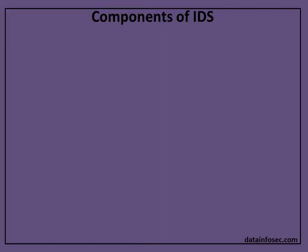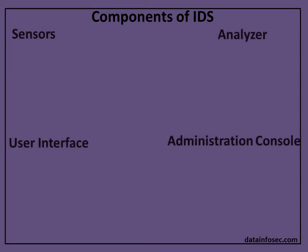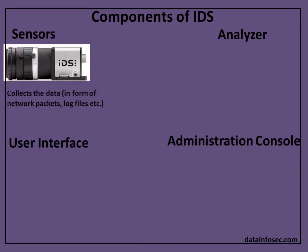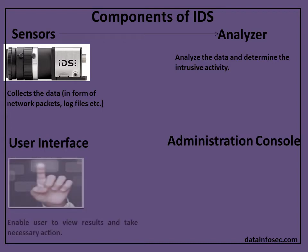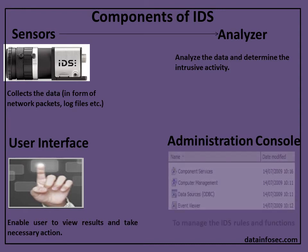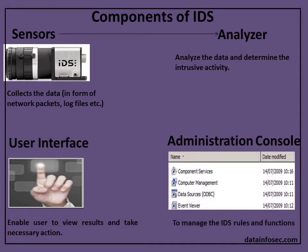The components of IDS are: sensor, analyzer, user interface, and admin console. The sensor collects data, which can be in the form of network packets, log files, and other related items. It transfers all data to the analyzer to further analyze and determine intrusive activity. The user interface enables users to view results and take necessary action, and the admin console is used to manage IDS rules and functions.